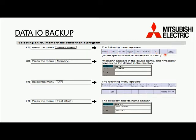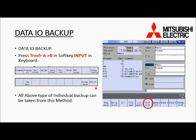Select which device you want to take data from and where you want to store it. The third option is directory, from which you can select program, all programs, tool offset, variable, coordinate offset, parameter, and so on. Transfer from A to B to take individual backup. Note: for backup, select memory in device A, and select USB or memory card in device B where you want to save the data.